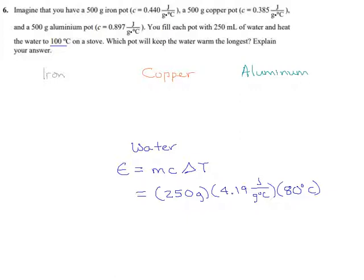And that gives us how much energy? 250 times 4.19 times 80 degrees, 83,800 joules, or 83.8 kilojoules. So in all of these cases, we're spending 83.8 kilojoules just heating up the water. No matter what kind of pot you're using, you're spending this much energy to heat the water inside it.